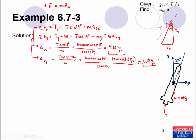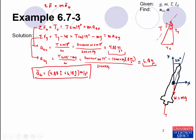So the total acceleration of the mass center is 4.88 î + 6.18 ĵ m/s². That gives us one of the two quantities we're looking for. The other quantity we need to find is the angular acceleration alpha, which we can determine using the sum of the moments equation.